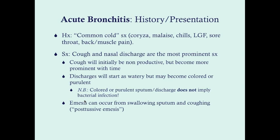Children with acute bronchitis can also have emesis. When a child is coughing a lot, emesis can result from the coughing itself or from swallowing sputum — this is called post-tussive emesis. If they have emesis in their history, you don't necessarily need to think GI causes. It can be caused by the constant coughing, which is a very prominent symptom with acute bronchitis.